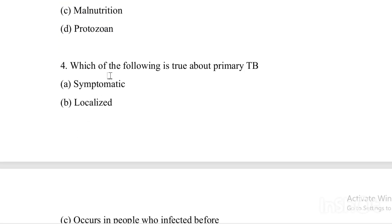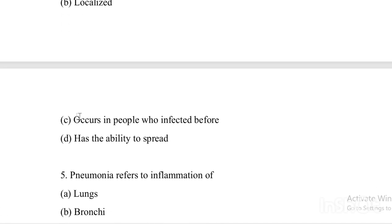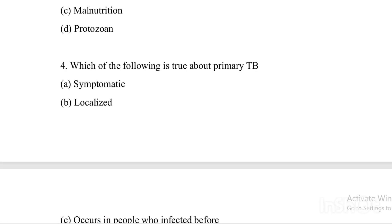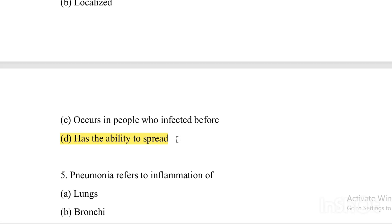Next question: Which of the following is true about primary TB? Option A: symptomatic. Option B: localized. Option C: occurs in people who were infected before. Option D: has ability to spread. The answer is Option D — has ability to spread.